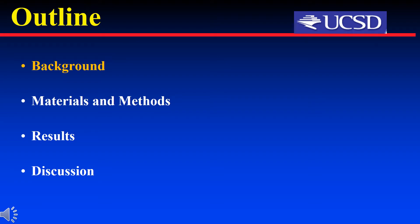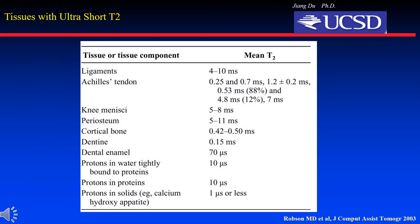First, I will introduce the background of short T2 imaging. Lots of tissues in the human body have relatively short T2 values, such as ligaments with T2 between 4 to 10 ms, Achilles tendon less than 2 ms, meniscus between 5 to 8 ms, and cortical bone less than 1 ms. However, conventional sequences such as GRE and FSE have a minimum echo time of several ms. Thus, these short T2 tissues show little or no signals in conventional sequences.